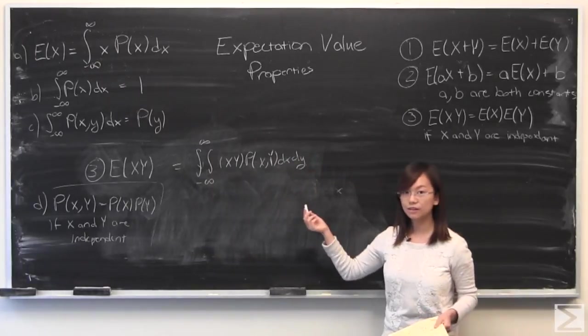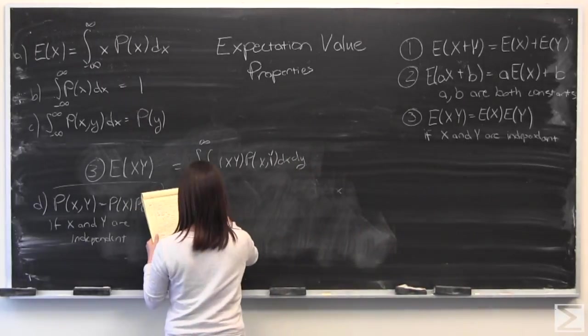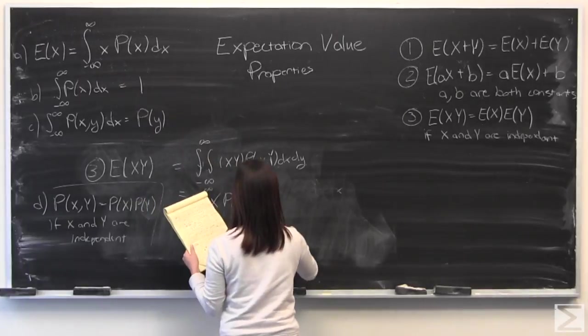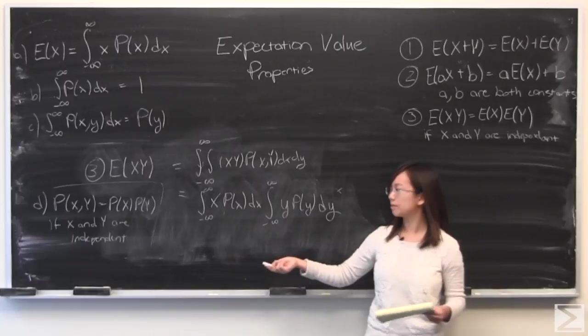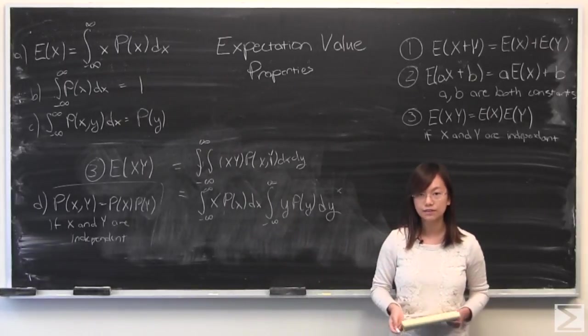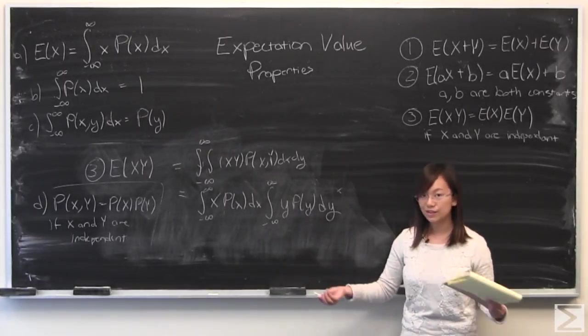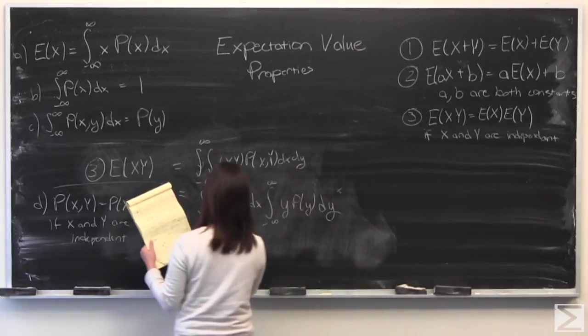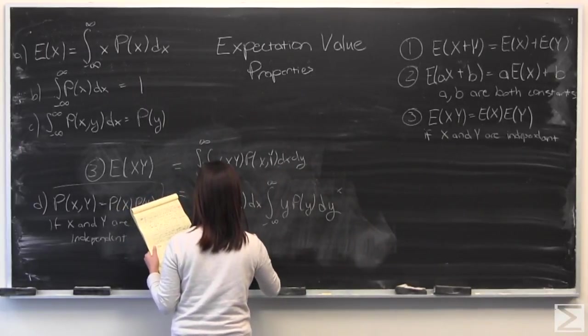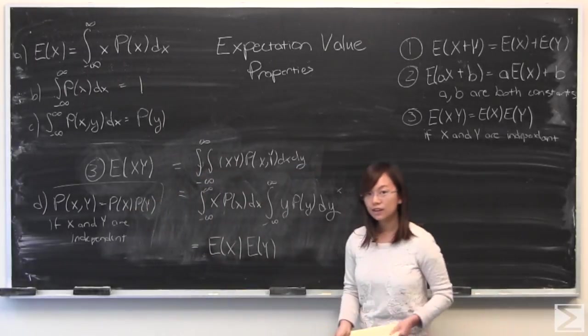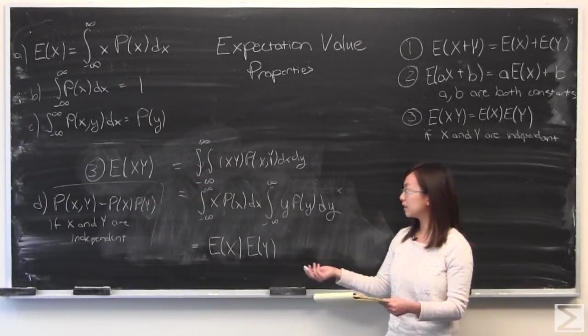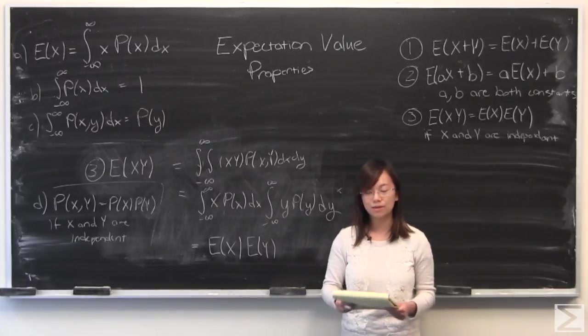I'll start by writing it out with property A. Since I'm using the fact that they're independent, I've split up the joint probability density function and split up the terms. Now you can very clearly see that this equals E(X) multiplied by E(Y). This is another important property to know.